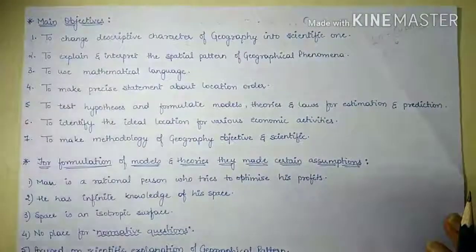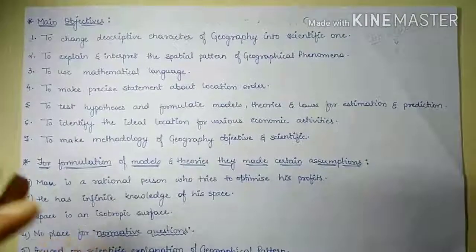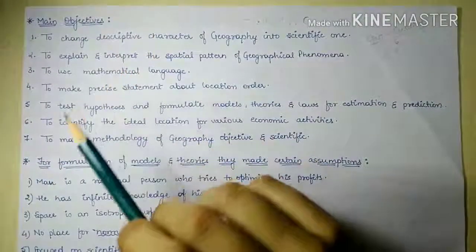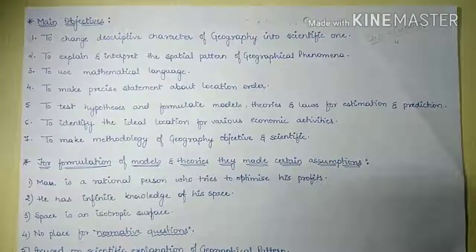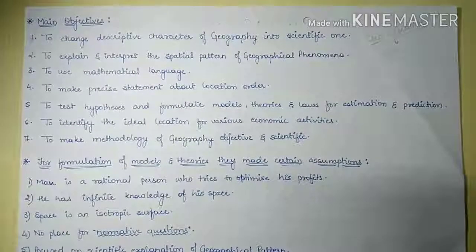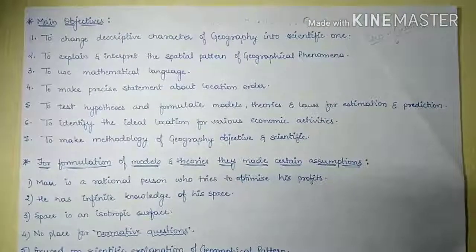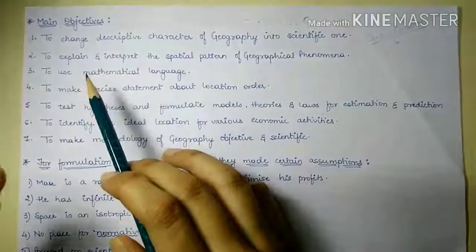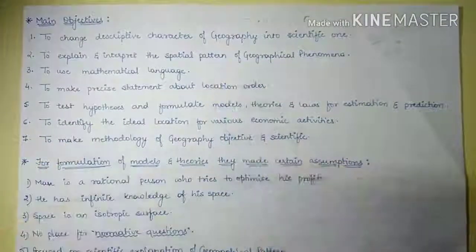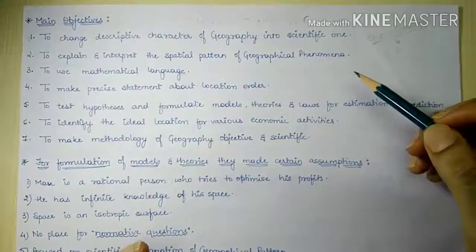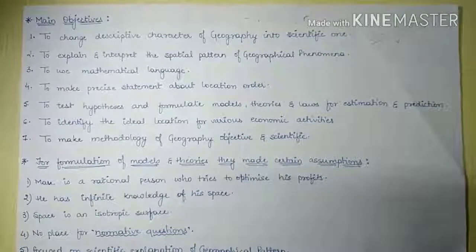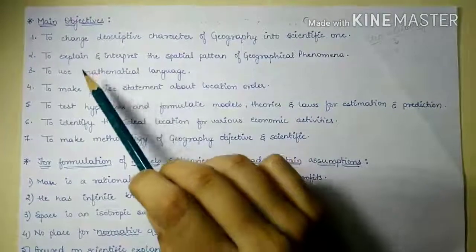This was the most important and base objective for the development of quantitative revolution. The next objective was to explain and interpret the spatial patterns of geographical phenomena. Quantitative revolution tried to explain various geographical phenomena and their spatial patterns in a very rational and objective manner that could be understood not only by geographers but also by the common public.